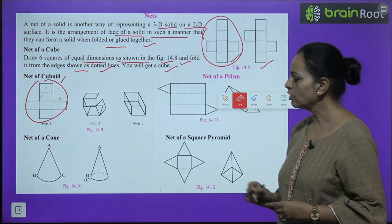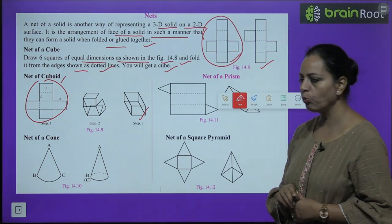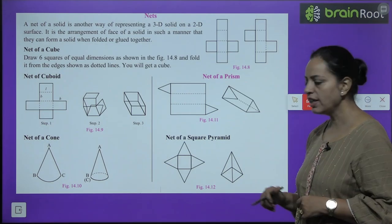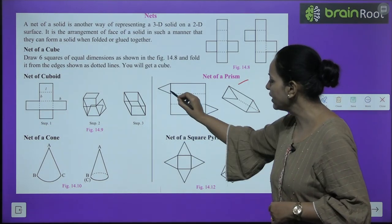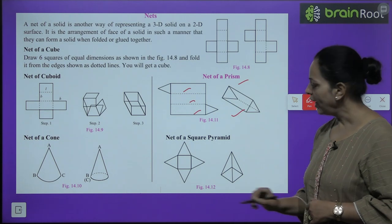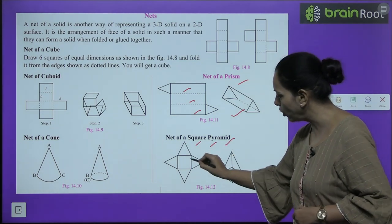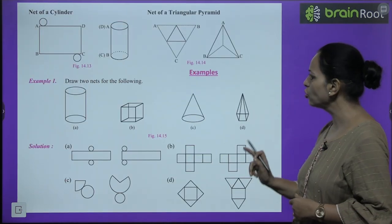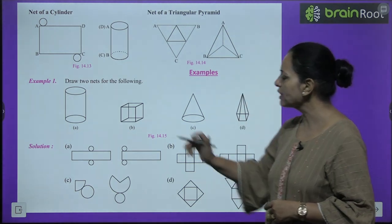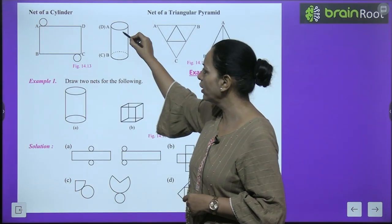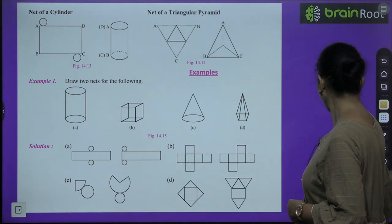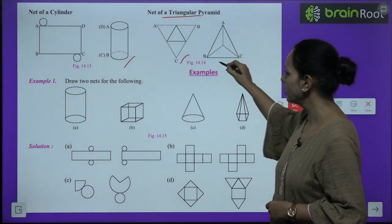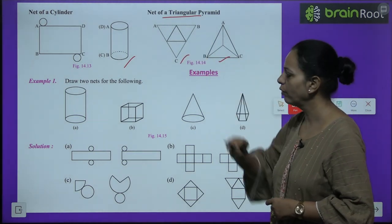Here is the net of a cuboid - there are rectangles. When we fold them, a cuboid will be formed. Here is the net of a cone. Here is the net of a prism - two triangles are given and the rest are rectangles. Here is the net of a square pyramid - there is a square and the rest are triangles. I hope this is clear to you. Here is the net of a cylinder. Here is the net of a triangular pyramid. This is a net.